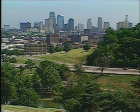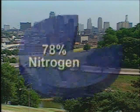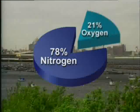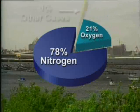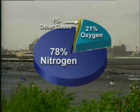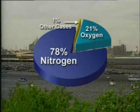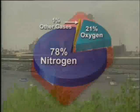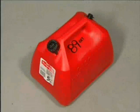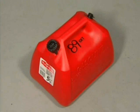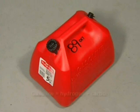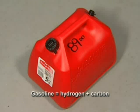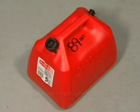The air we breathe is made up of 78% nitrogen, 21% oxygen, and 1% of other gases, such as carbon dioxide. Gasoline consists of hydrocarbon molecules that contain various combinations of hydrogen and carbon atoms.